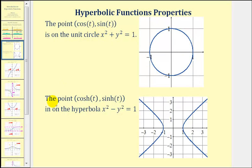Similarly, if we have a point where the x-coordinate is hyperbolic cosine of t and the y-coordinate is hyperbolic sine of t, the point would be on the hyperbola x squared minus y squared equals one. Because these points are on a hyperbola, this is the reason why they're called the hyperbolic functions.